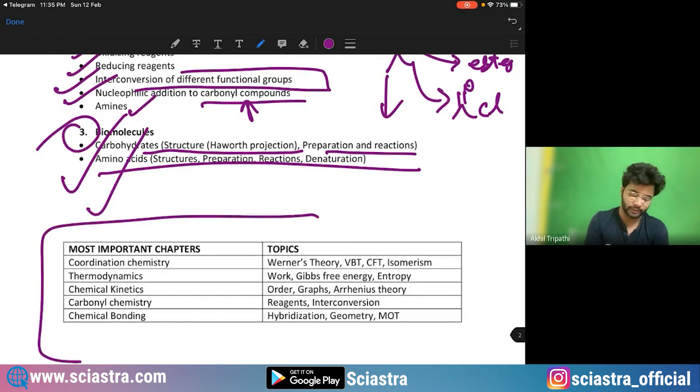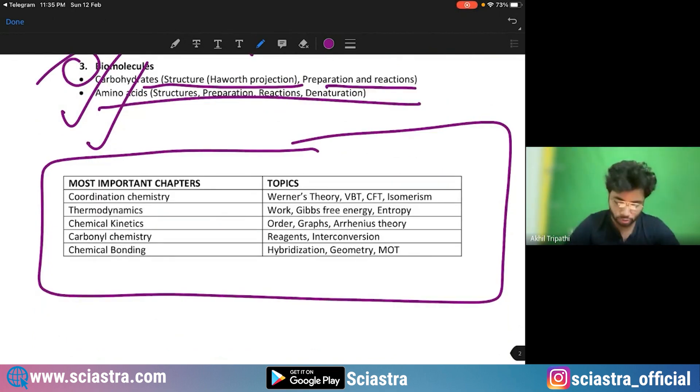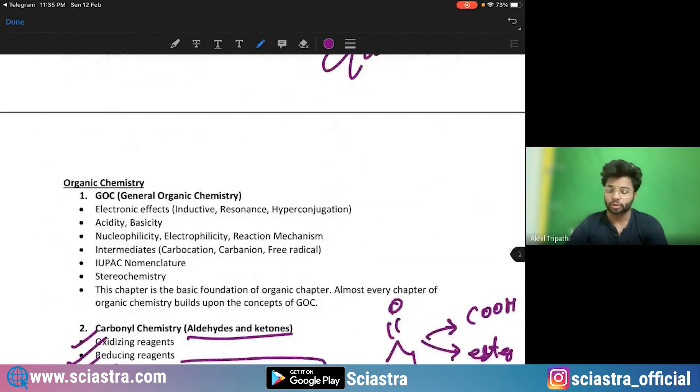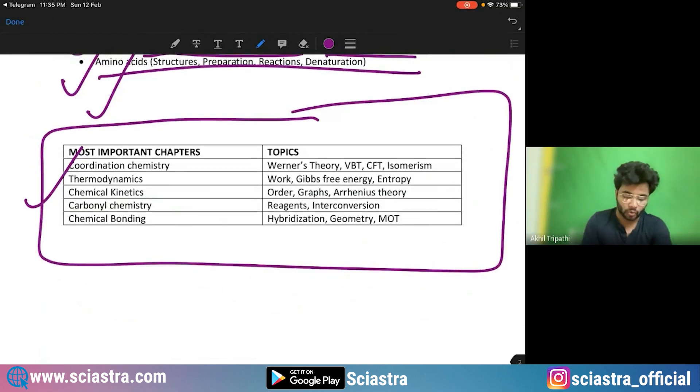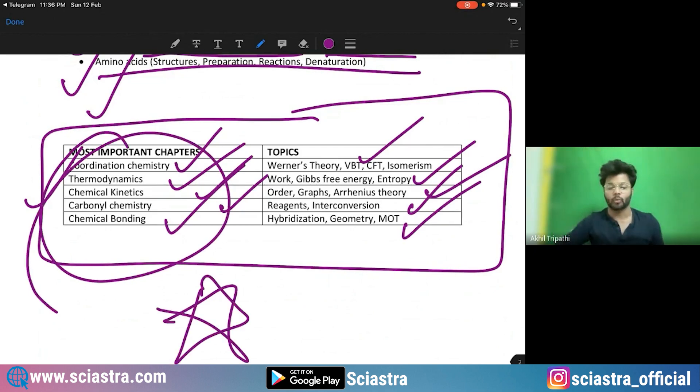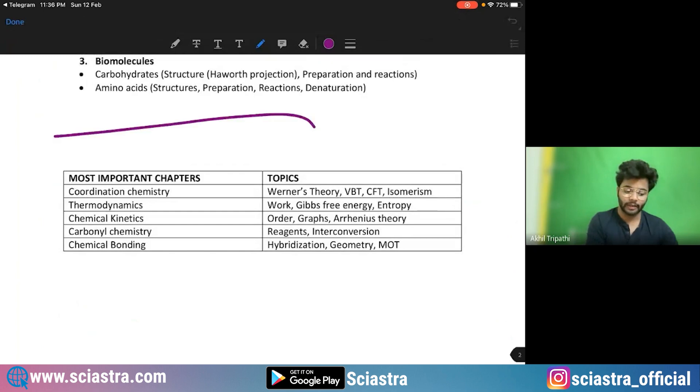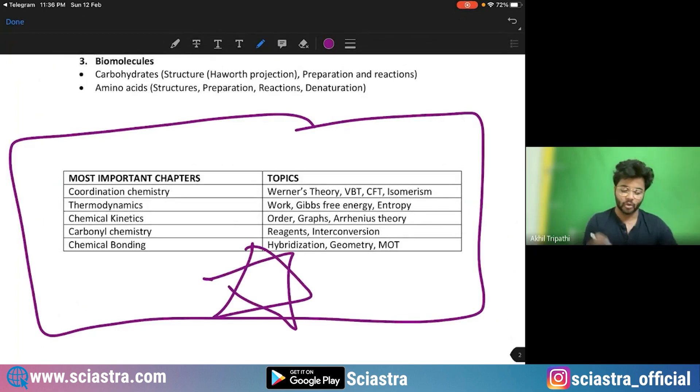Again, summarizing this whole thing, something that you should not miss at any cost. I told you so many things. Do not do anything else. You have to do this: coordination chemistry, thermodynamics, chemical kinetics, carbonyl chemistry, chemical bonding. You should do these five chapters properly. No one can stop you from scoring in chemistry. These are the most important topics. I am telling you. These are the most important topics in chemistry. Whether you do anything or not, this is the most important thing.